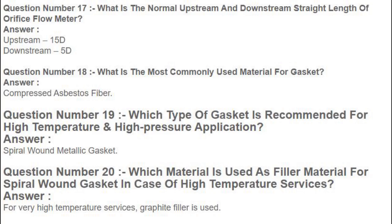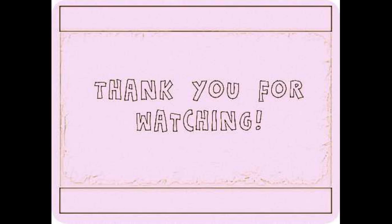Question number 18: What is the most commonly used material for gaskets? Answer: Compressed asbestos fiber. Question number 19: Which type of gasket is recommended for high temperature and high pressure applications? Answer: Spiral wound metallic gasket. Question number 20: Which material is used as filler material for spiral wound gaskets in case of high temperature services? Answer: For very high temperature services, graphite filler is used.